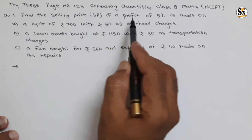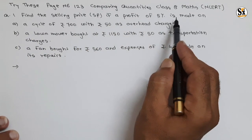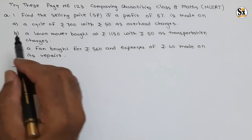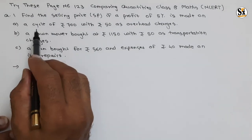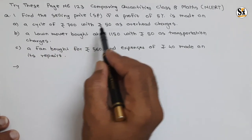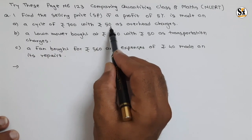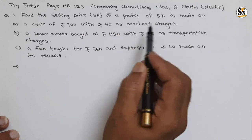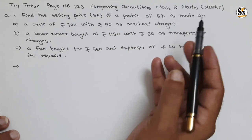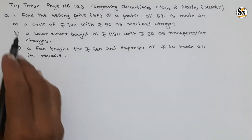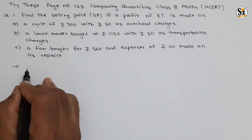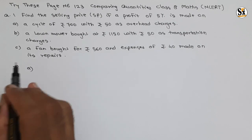The question is: find the selling price (SP) if a profit of 5 percent is made. Three situations are given. First, a cycle costs rupees 700 with rupees 50 as overhead charges.